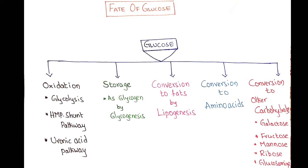The significance of the HMP pathway is that when glucose is oxidized by this pathway, it does not release energy, but it is concerned with the synthesis of pentose sugars and NADPH. In the uronic acid pathway, glucose is oxidized to produce glucuronic acid, which is used in the synthesis of mucopolysaccharides and also in detoxification reactions.